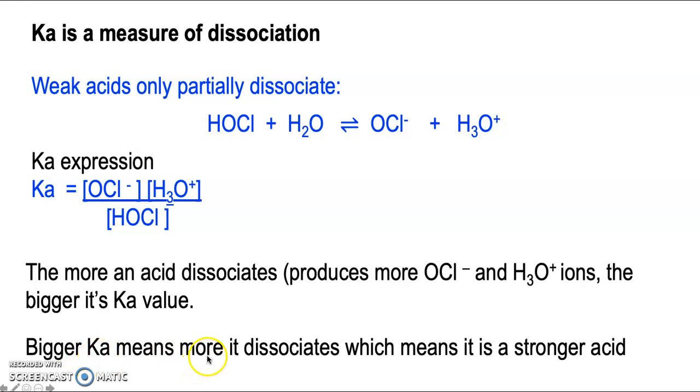The bigger the Ka, which means it dissociates more, and the more it dissociates, then it's a stronger acid.